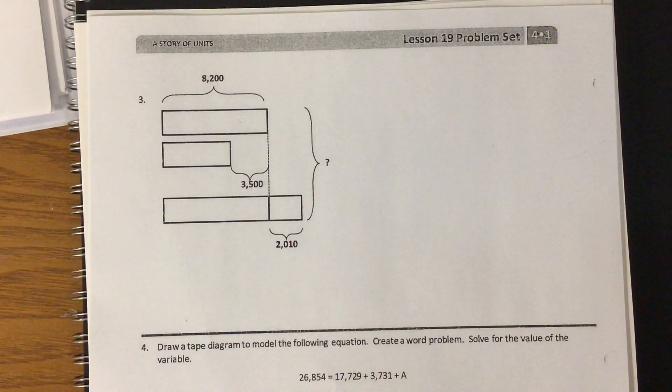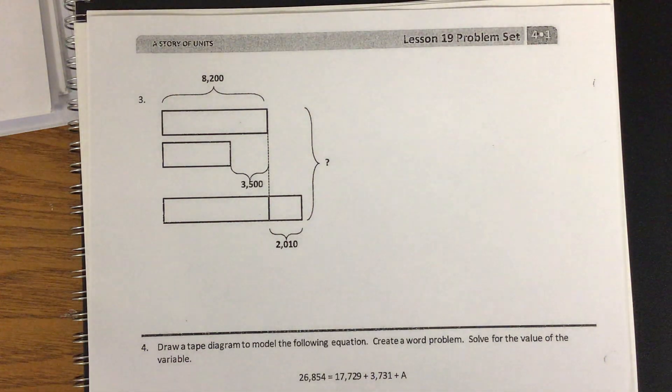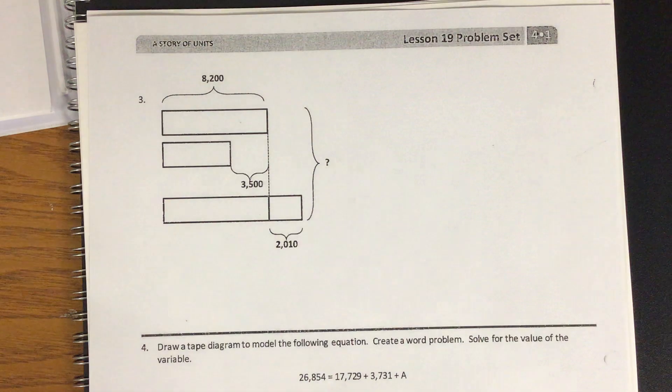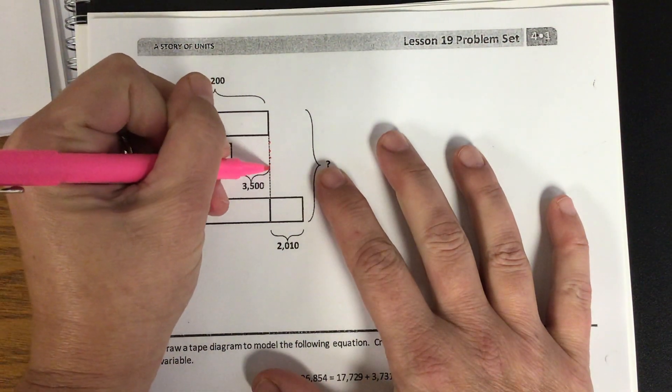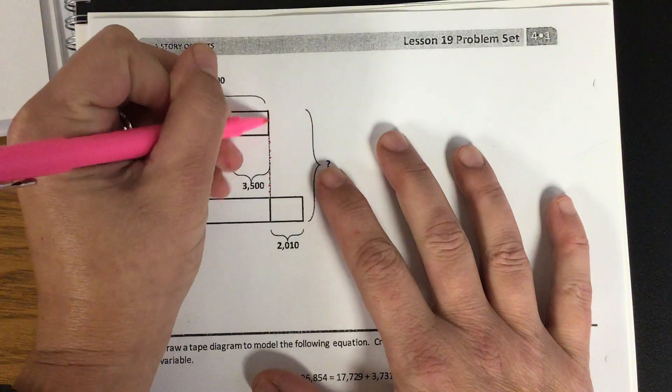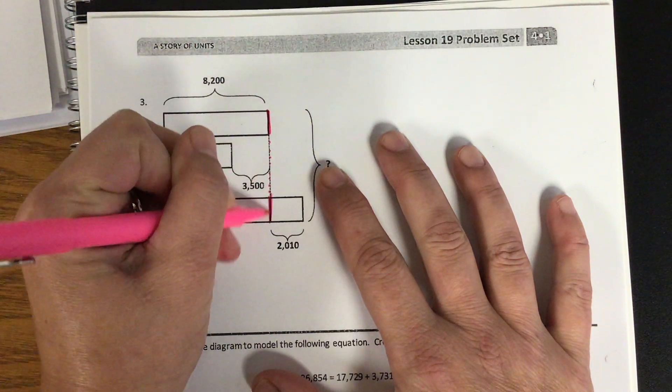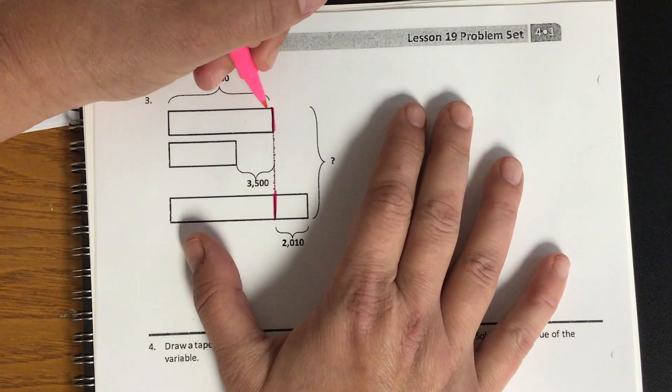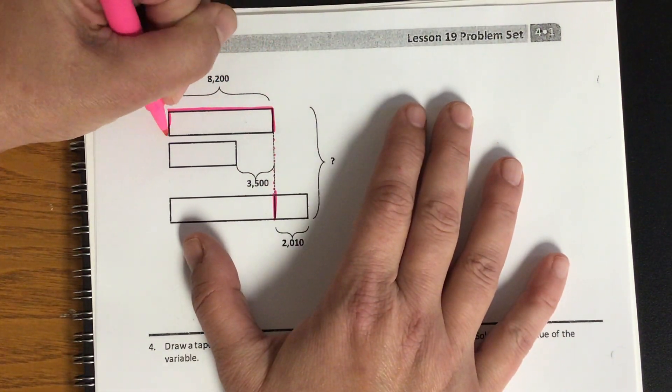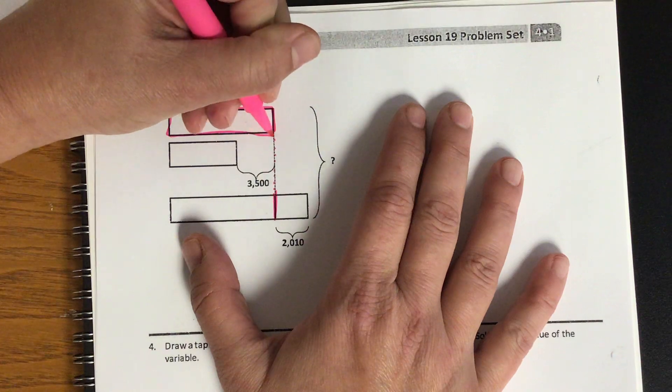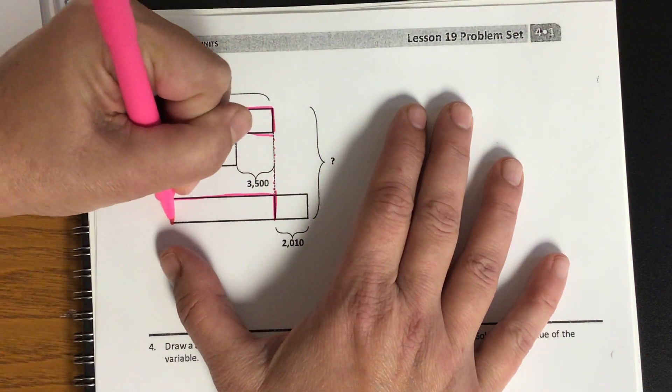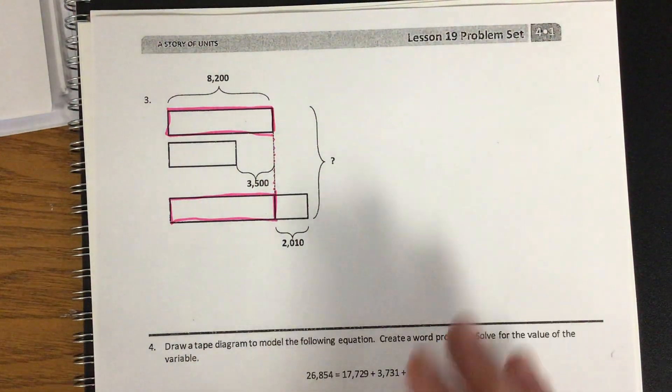All right, so they give you this tape diagram, and you have to figure out what would be a word problem for this. When I look at all these tape diagrams, the first thing that I see is this dotted line here, and it perfectly lines up with this tape diagram and this tape diagram. So the first thing that I notice when I'm looking at this math is that this tape diagram and this tape diagram are exactly the same.